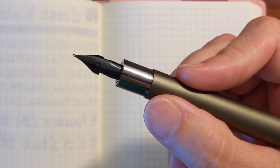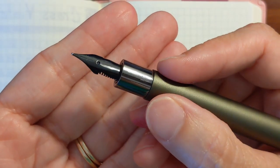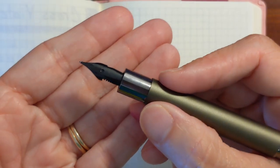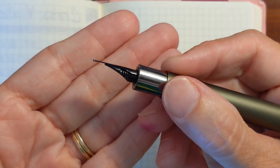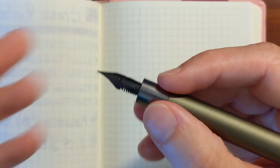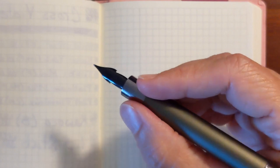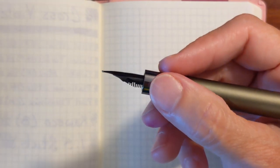It has the number five OmniFlex nib. Now I don't do writing where I need to flex the nib, but I do believe this nib has just the slightest amount of bounce to it that you wouldn't get in just a normal stainless steel nib.